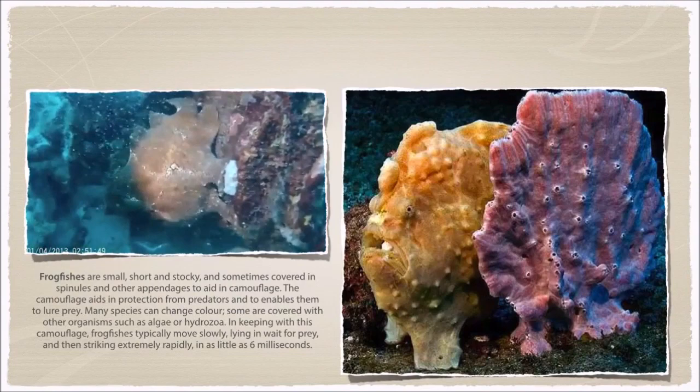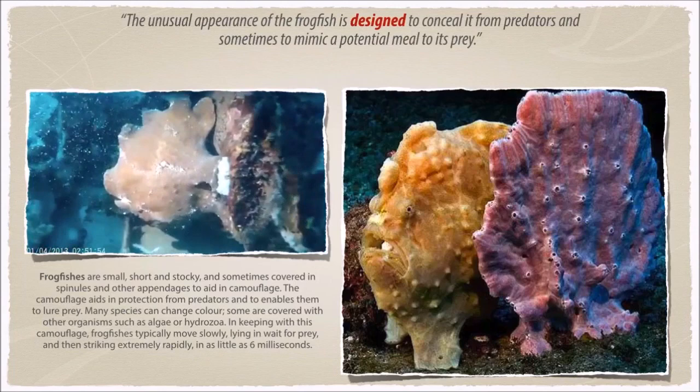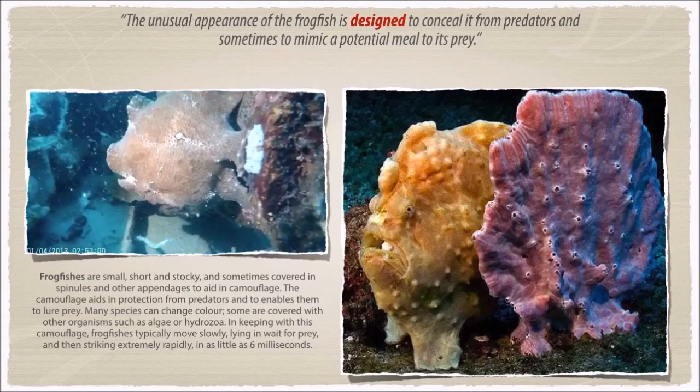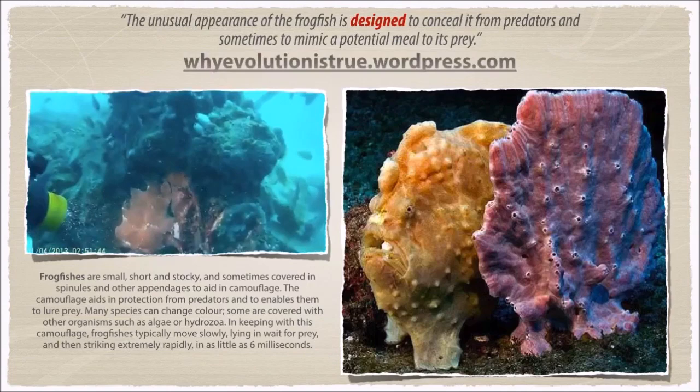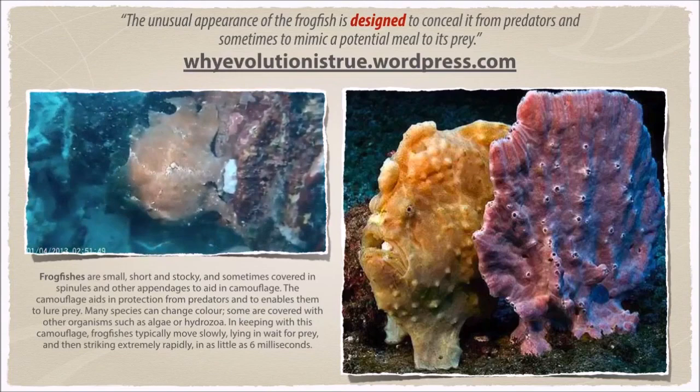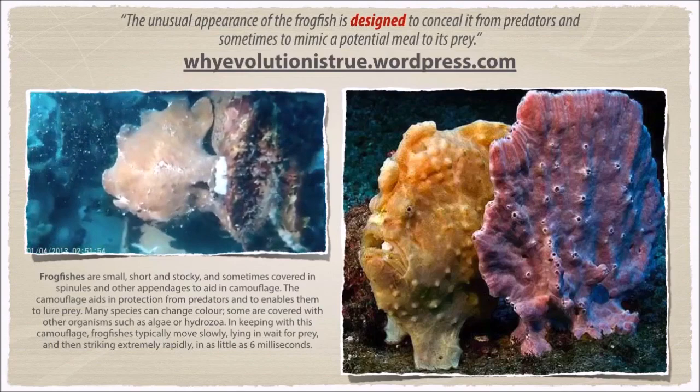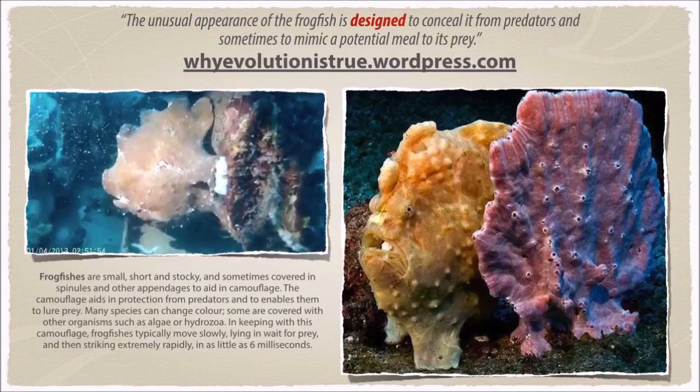This is recognizable by anyone. For example, with the frogfish — I found a quote online that said, 'the unusual appearance of the frogfish is designed to conceal it from predators and sometimes to mimic a potential meal to its prey.' Interestingly enough, this quote came from whyevolutionistrue.com. So even evolutionary advocates have to acknowledge the clear and present design in all nature. They like to say 'the appearance of design,' but that's just a nice euphemism to try and dodge the contradictory logic in their theory.